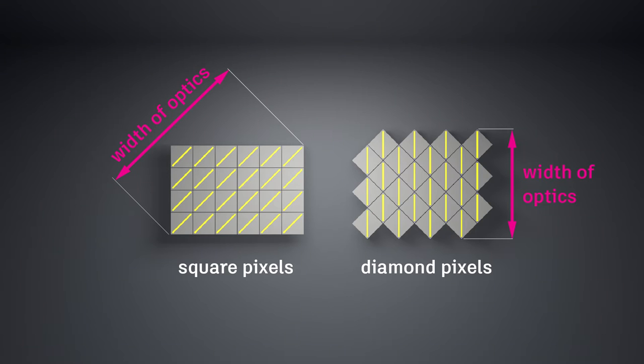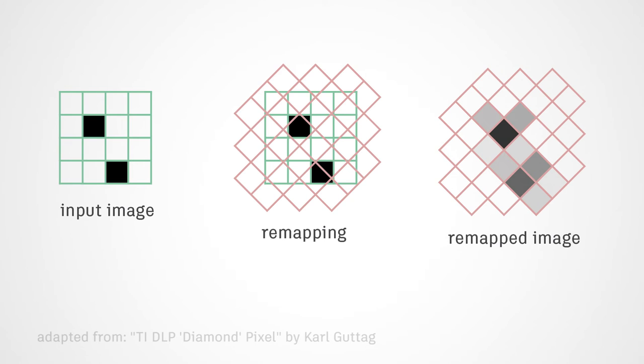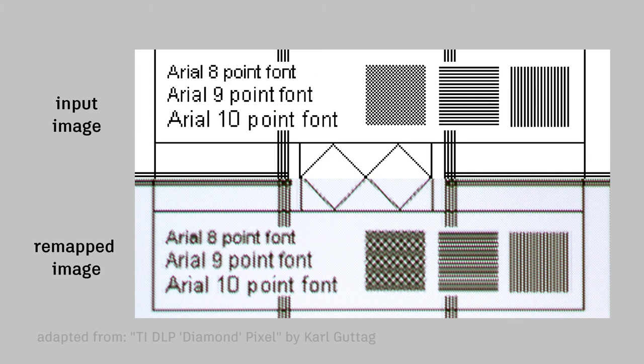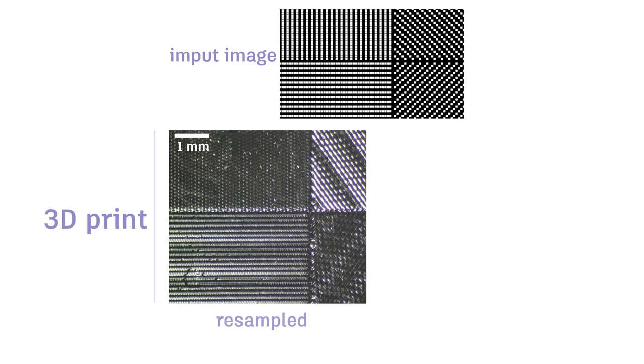The downside of diamond orientation is that you have to remap the square pixels in your image to the diamond pixels in your projector. The real issue is that it is not a one-to-one remapping, and you inevitably blur your image and lose resolution. For projecting videos, this is fine, but it's not great for 3D printing.